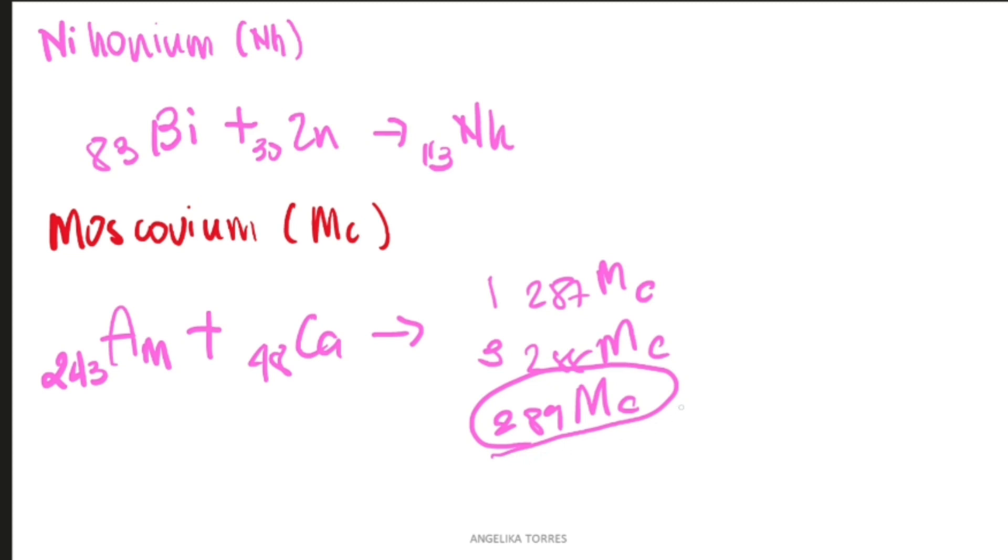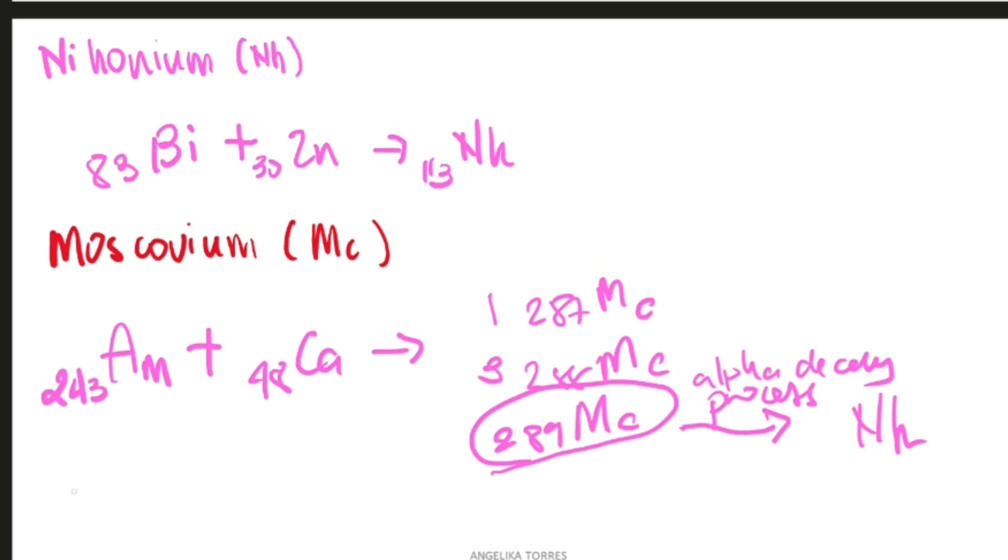When moscovium 289 goes through alpha decay process, it can actually produce nihonium. Russian scientists use calcium 20 and smash it with americium 95, producing moscovium 115.